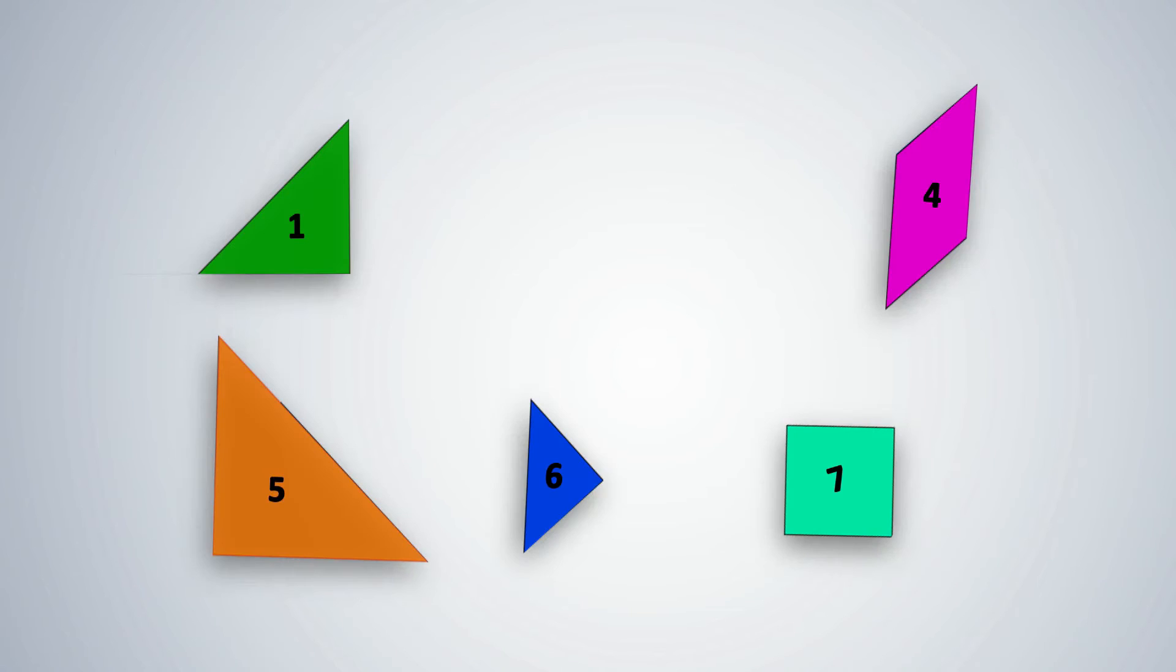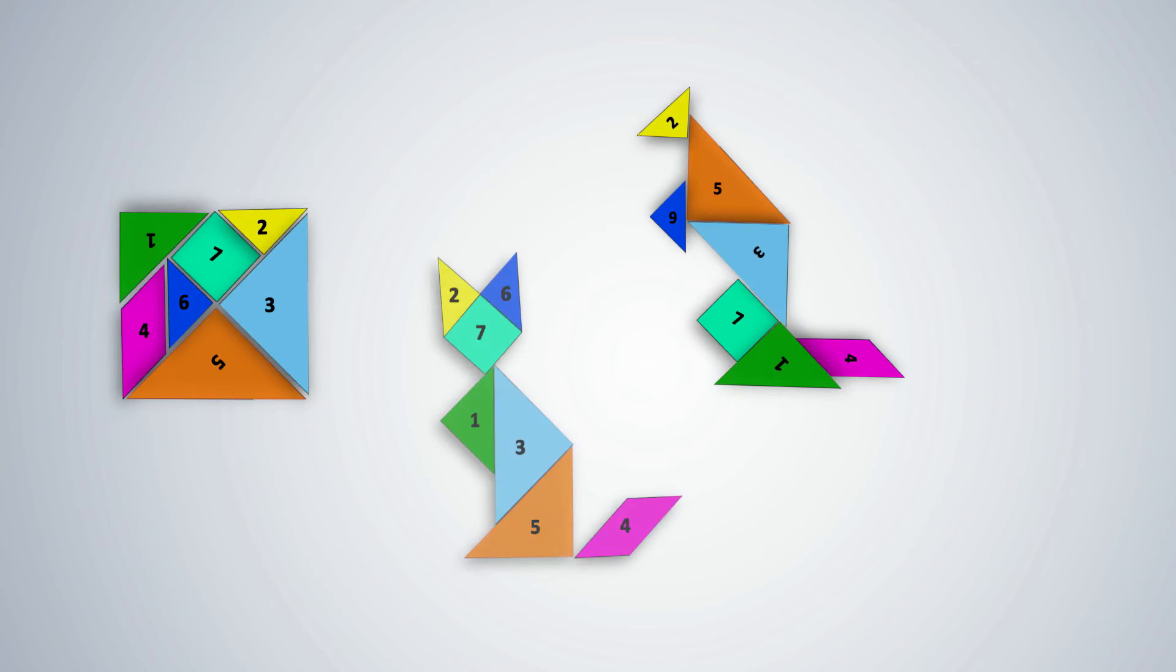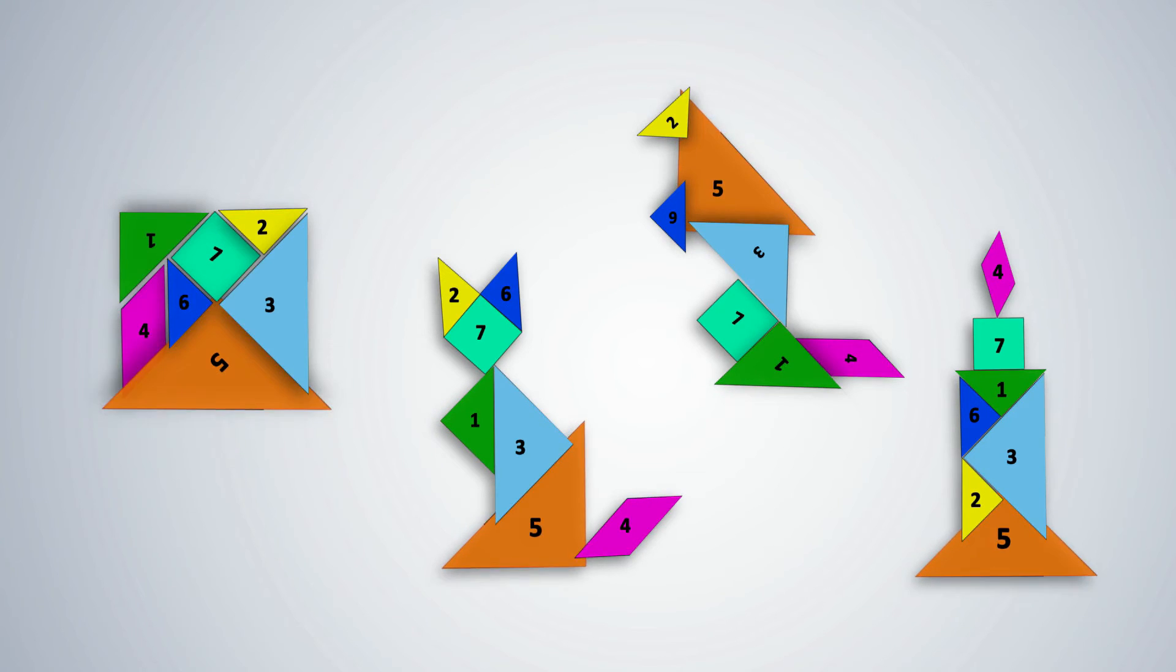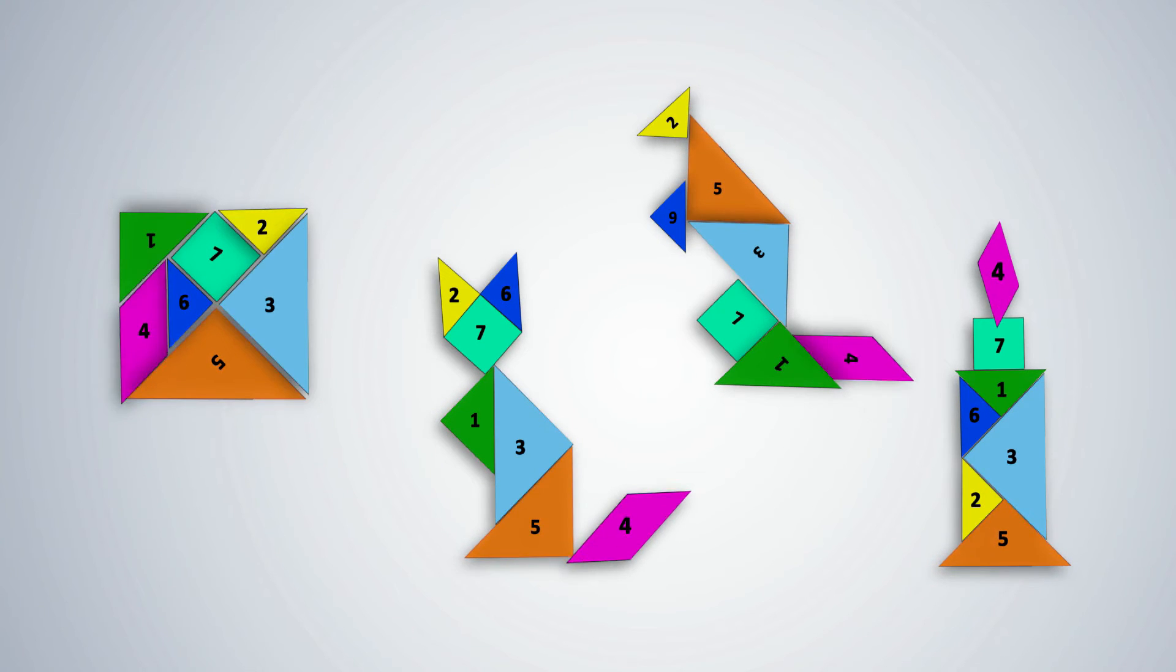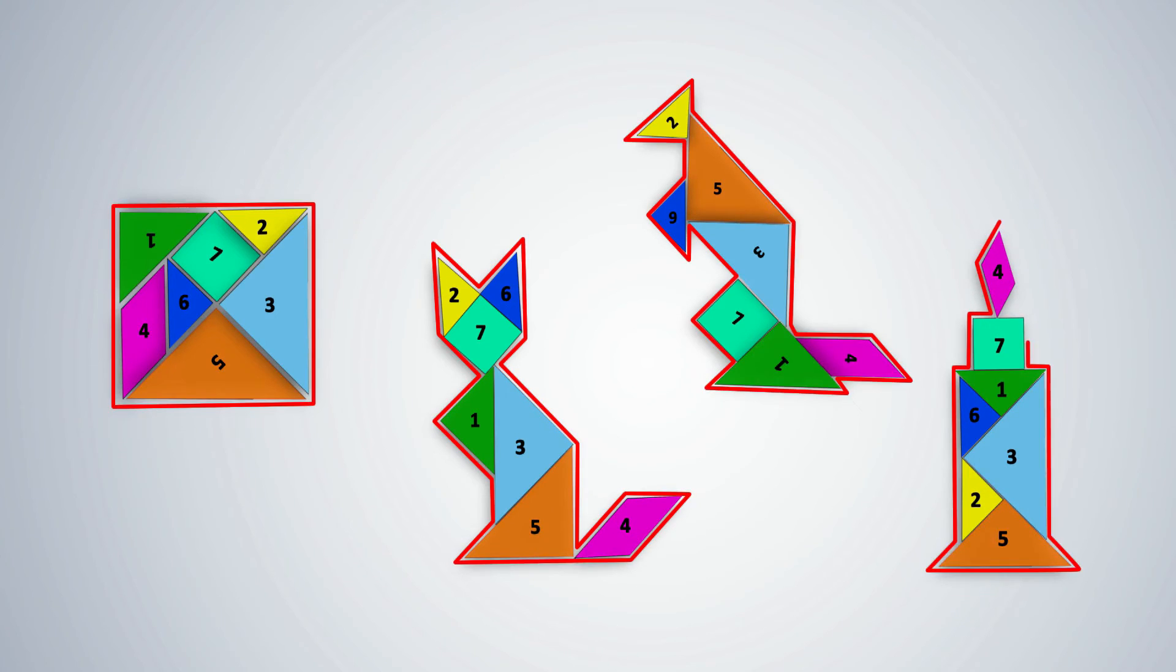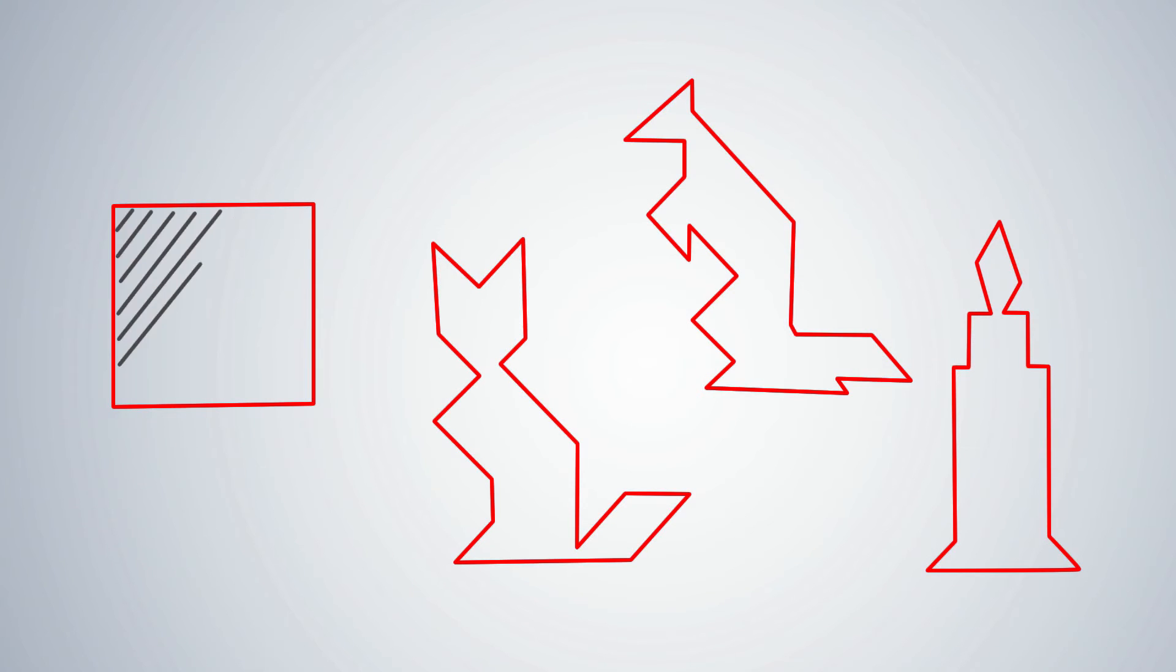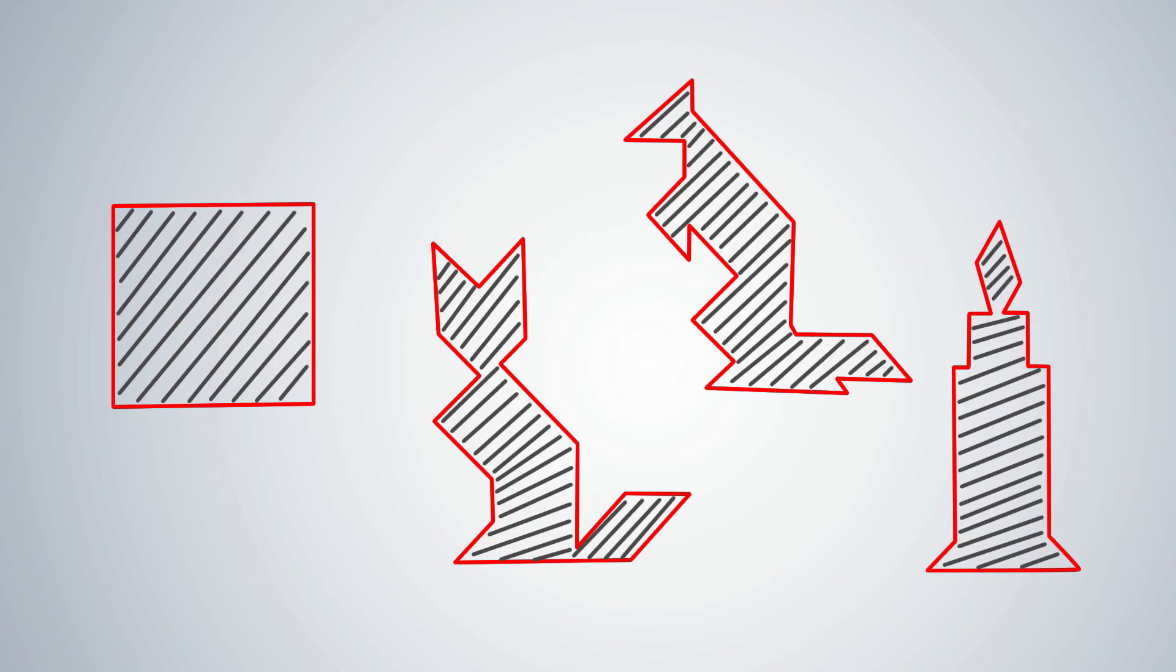Give students the tangram consisting of 7 pieces from the maths kit. Ask them to make as many shapes as they can using all the 7 pieces. Point out that since the same pieces are used, the area of each new figure does not change. Let them measure the perimeter of each figure. They will see that while the area is the same, the perimeter can vary.